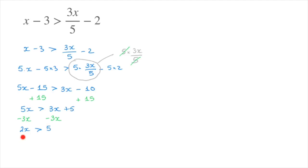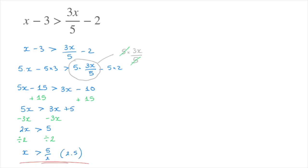Finally, looking at the left-hand side, we have x which is being multiplied by 2. So to get rid of that 2, I divide by 2, and I must do the same on the right-hand side. That leads us to 2x divided by 2, which is just x, greater than 5 divided by 2, which we can write as 5 over 2, or 2.5. And that's the final answer.